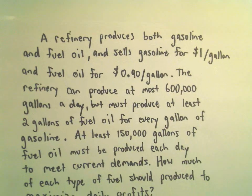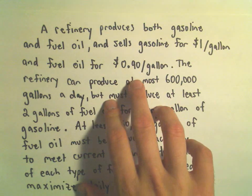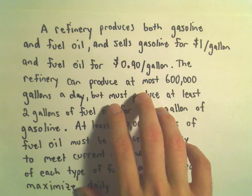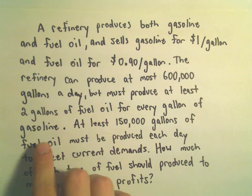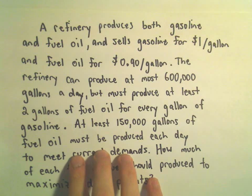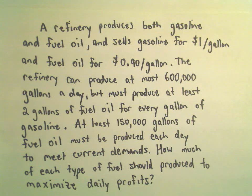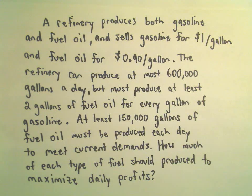In this video we're going to do a word problem that makes use of linear programming to help us find a maximum value. Suppose a refinery makes gasoline and fuel oil, sells gasoline for a dollar a gallon, fuel oil for 90 cents a gallon. The refinery can make at most 600,000 gallons a day, but it's got to produce at least 2 gallons of fuel oil for every gallon of gasoline. Also, at least 150,000 gallons of fuel oil must be produced each day to meet current demands. We want to know how much of each type of fuel should be produced to maximize the daily profits.